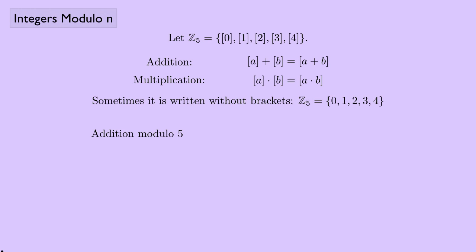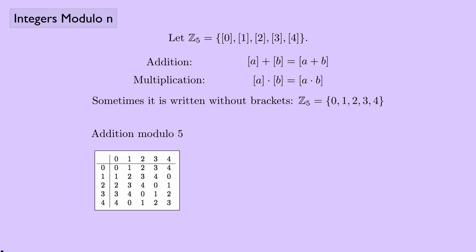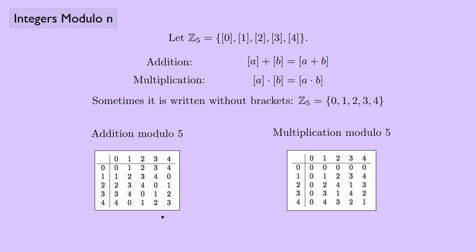We can display an addition table modulo 5 — for instance, 2 + 1 = 3, or 3 + 4 = 2 (mod 5). There's also a multiplication table mod 5 — for instance, 2 × 1 = 2, or 4 × 2 = 3 (mod 5).